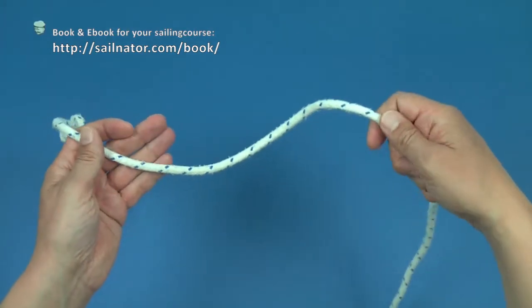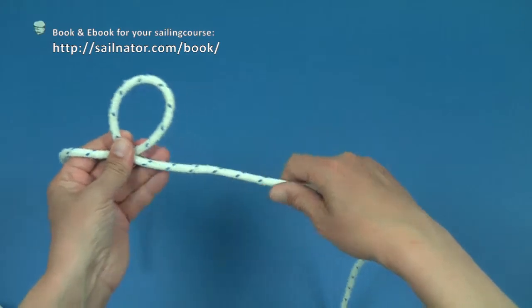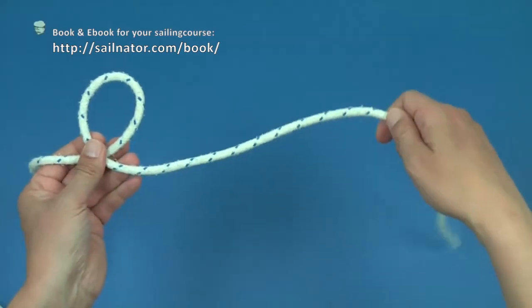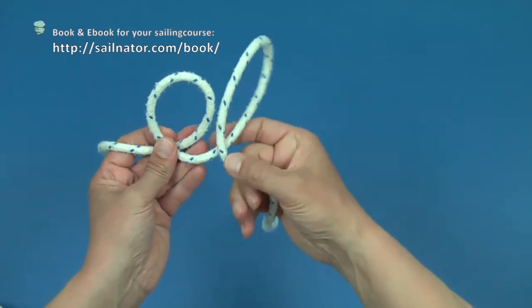I lay a loop now where the loose part lies over the moored part and next to it a second loop where the loose part lies over the moored part.